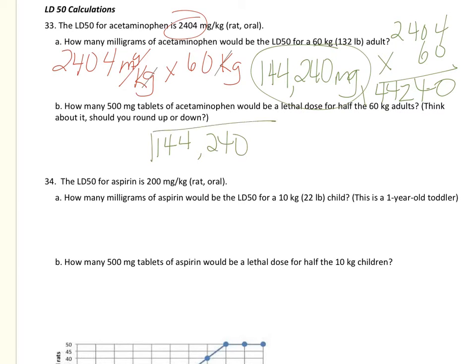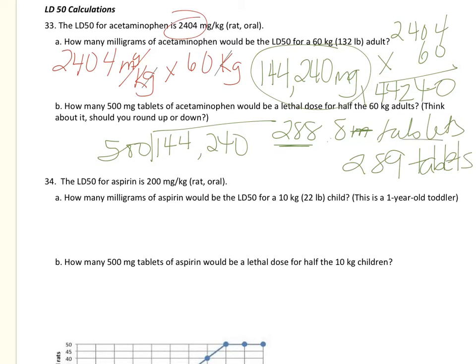And we'll divide by 500, and our milligrams cancel out. When I do this long division problem, my answer is going to be 288.8 and I'm going to round up because 288 tablets is not quite enough to kill half the 60 kilogram adults, but 289 is enough. That's the minimum number of whole tablets, so that's why we round up.